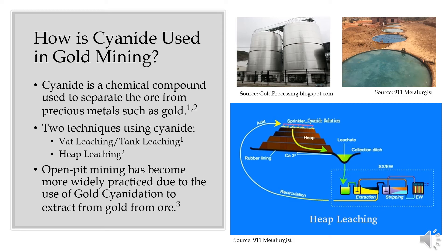There are two techniques which use cyanide to extract gold from ore. The first technique is called vat leaching. You can see two pictures of vat leaching on the top right-hand corner. The photo on the left shows a larger, well-funded operation utilizing a closed vat. The photo on the right is an example of open vat leaching.